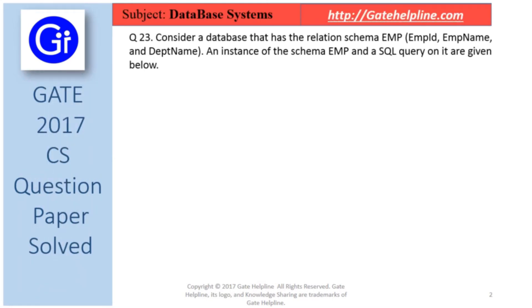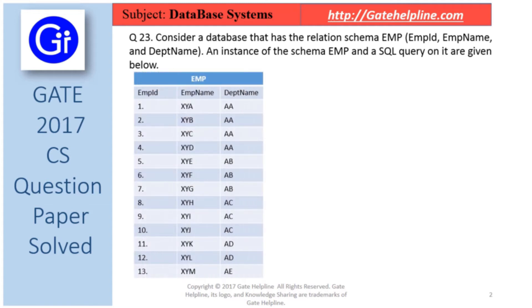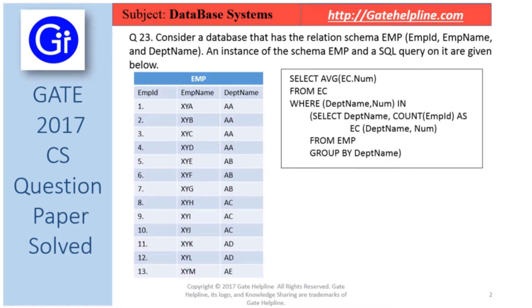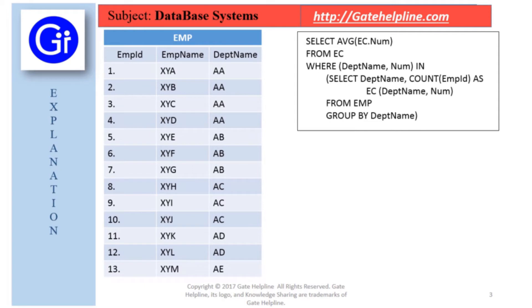The next question asks us to consider a database with the relation schema EMP having columns emp_id, emp_name, and department_name. An instance of the schema EMP and a SQL query on it are given. The output of executing the SQL query is to be determined.